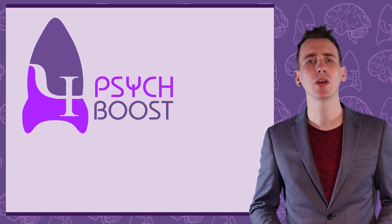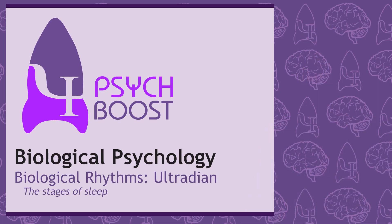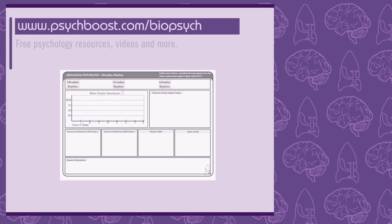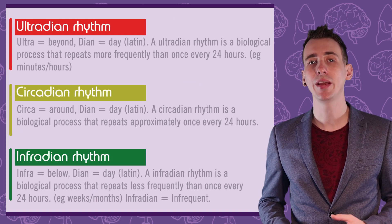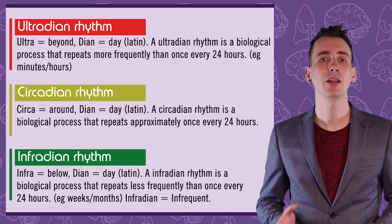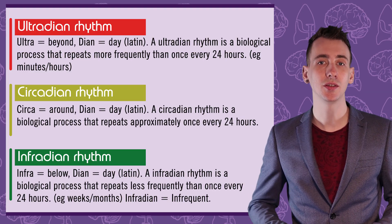In this episode of PsychBoost: the stages of sleep and ultradian rhythms. So far we've discussed the 24-hour circadian rhythm, known as the sleep-wake cycle, and the 28-day infradian rhythm, the menstrual cycle. In this video we'll explore the ultradian rhythm — the stages of sleep.